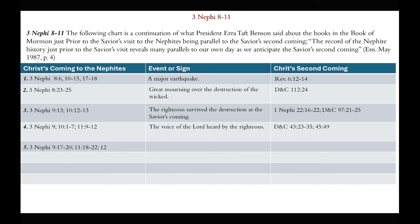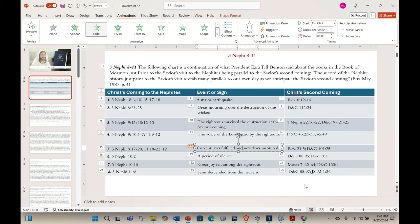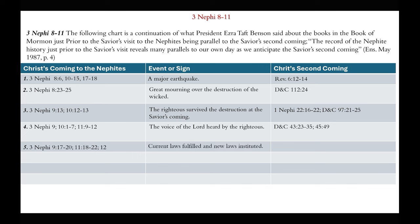Number 5, 3rd Nephi 9:11-12 — current laws were fulfilled and new laws instituted: the fulfillment of the law of Moses and new laws instituted, which will happen again in Revelation 21 and D&C 101. Number 6, 3rd Nephi 10:2 — there was a period of silence, which will be repeated in D&C 88:95 and Revelation 8:1.